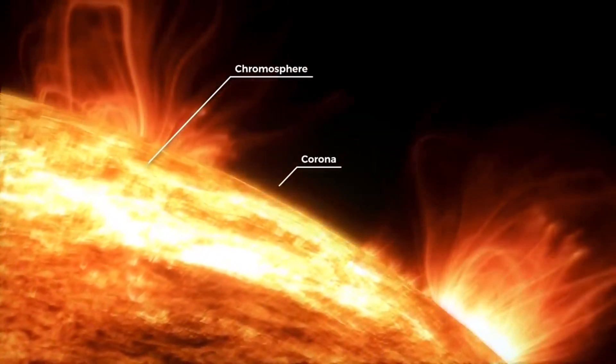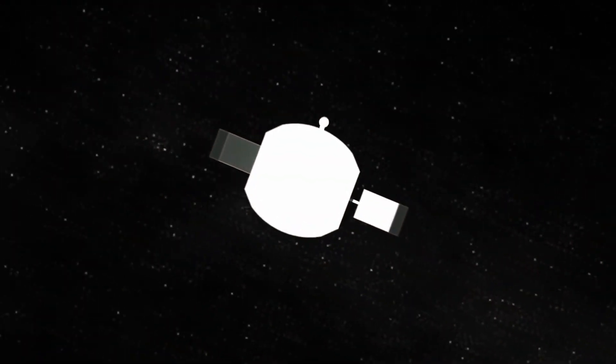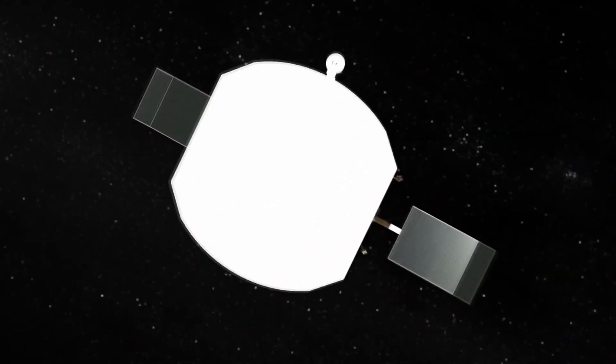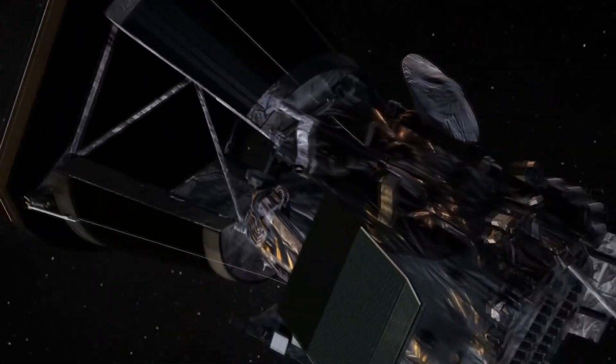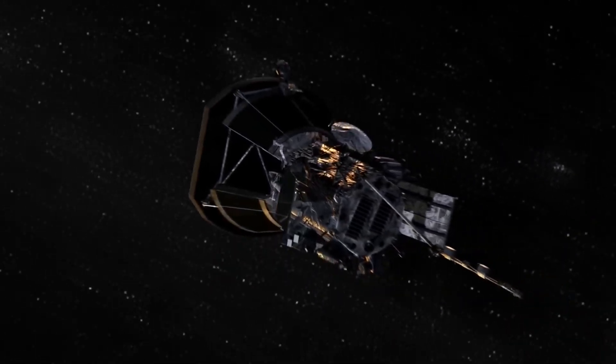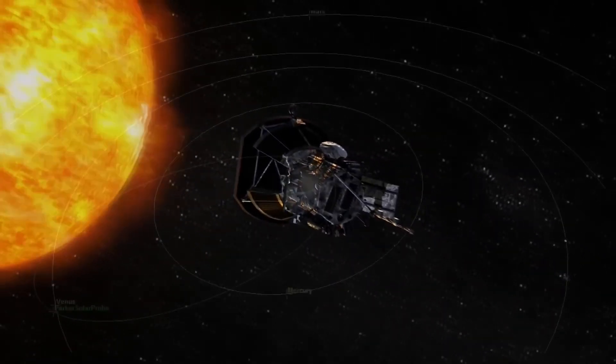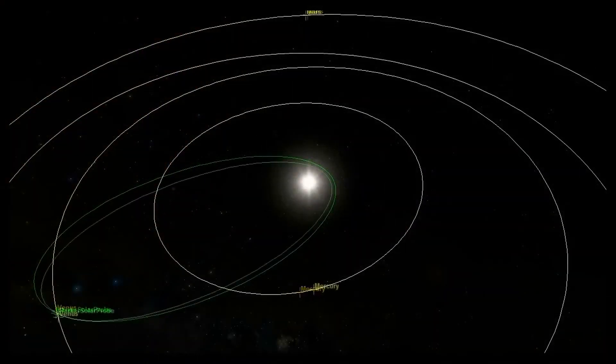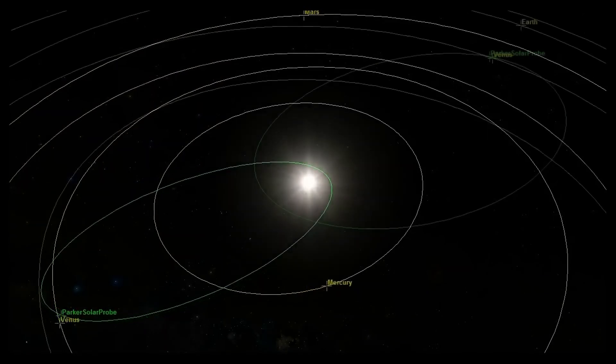In any case, Parker's measurements found that the Alfvén surface is located on average 13.6 million kilometers from the center of the star. The boundary of these waves is uneven, and its height can change over time. Besides this, the probe discovered many other phenomena.